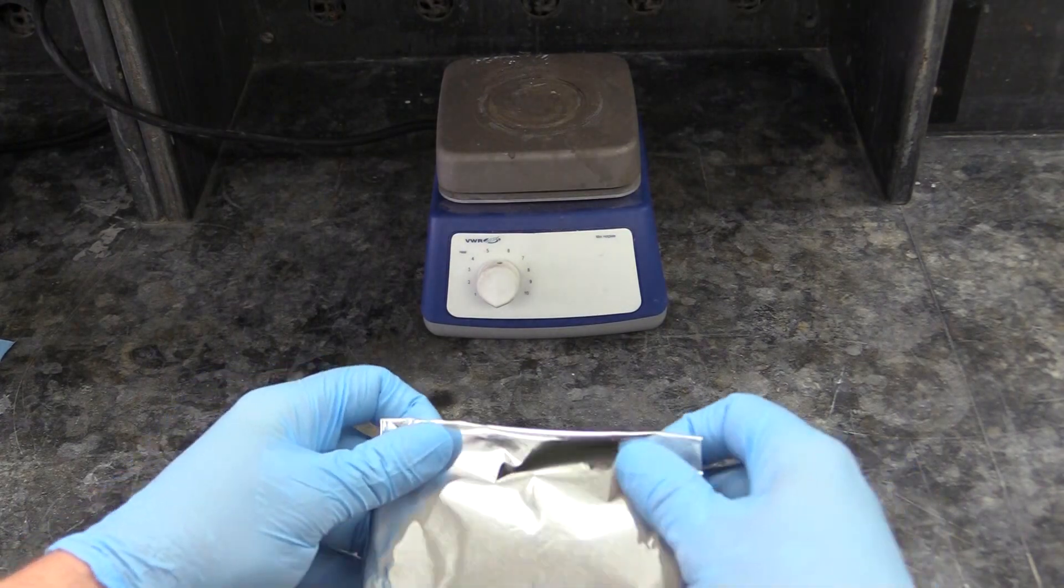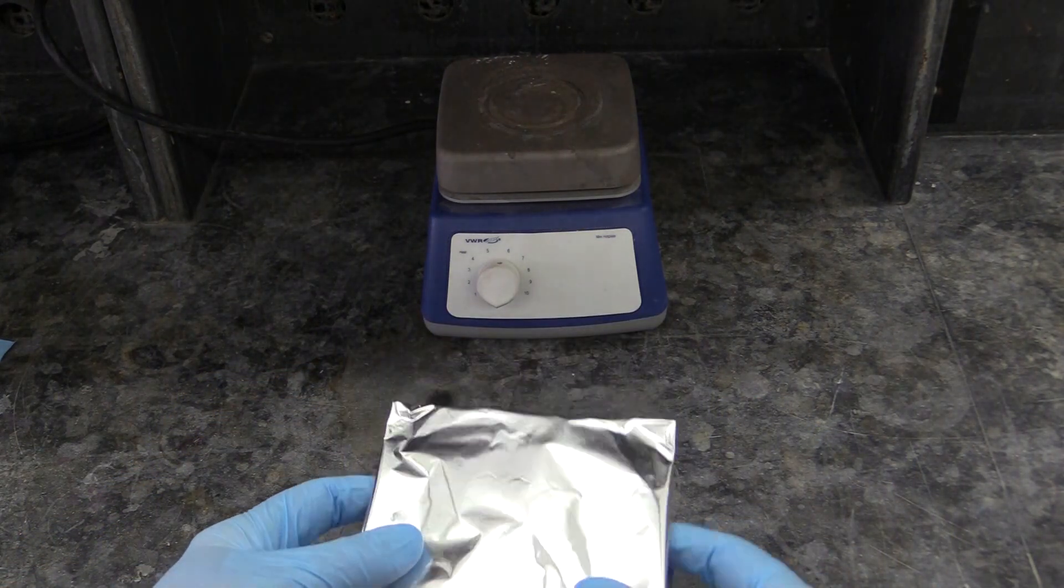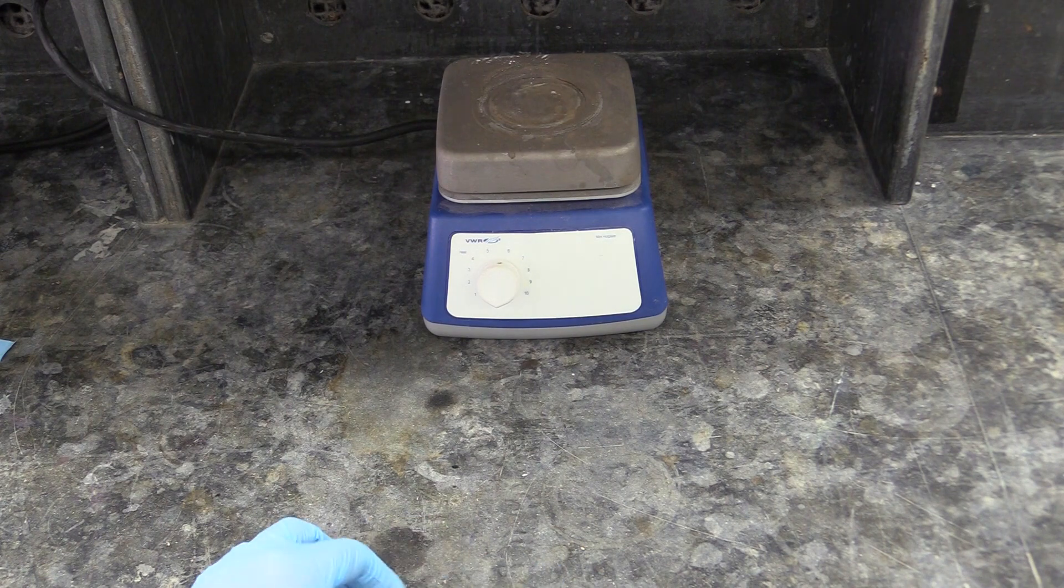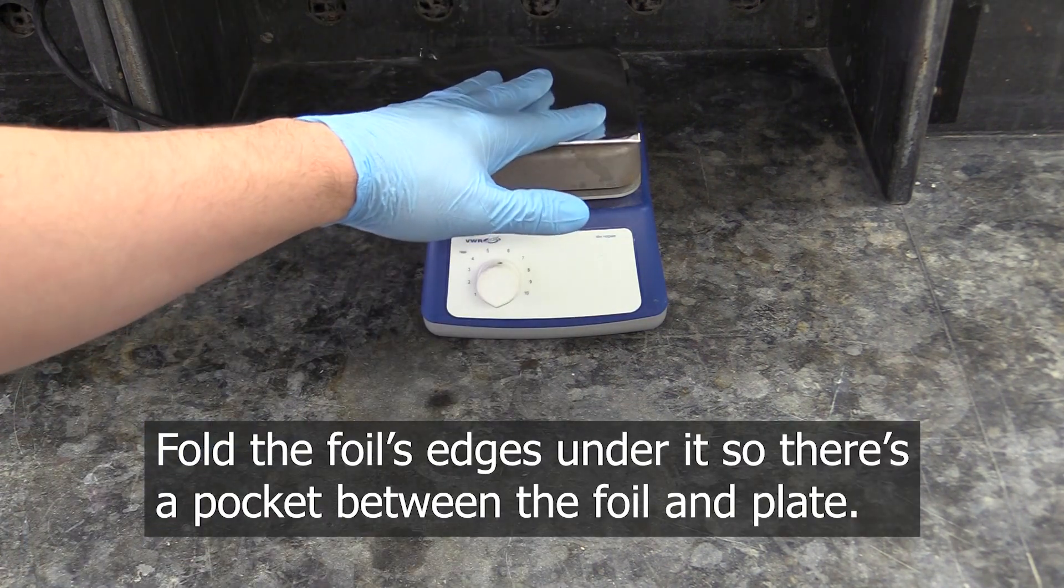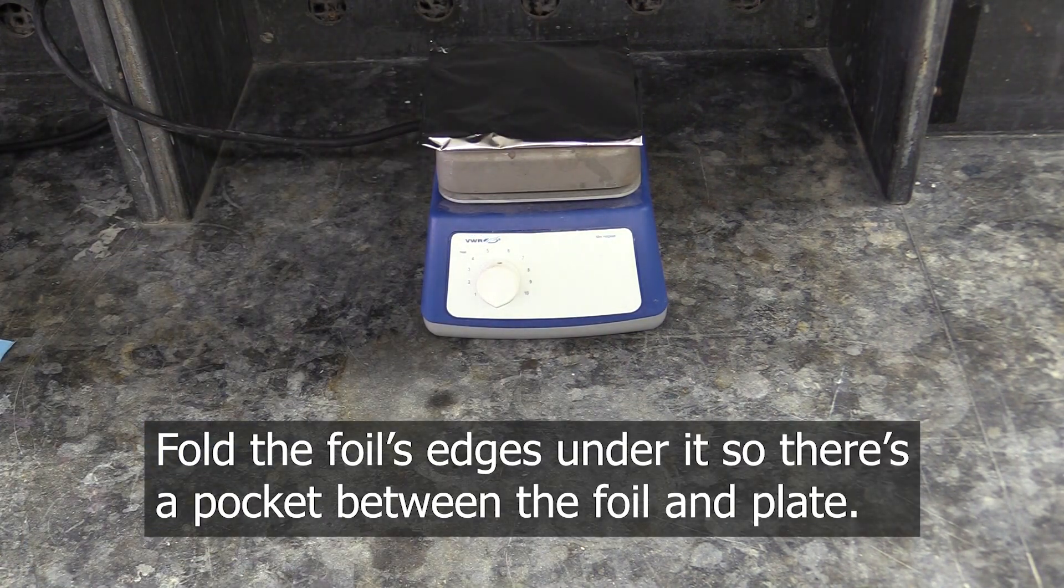As soon as all the liquid has passed through your filter papers, it's time to dry them. Before you do this, you want to make a foil hat for your hot plate. This makes it so the papers won't glue themselves to the plate as they dry.